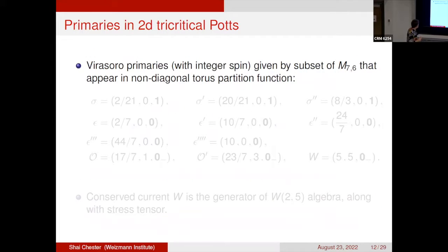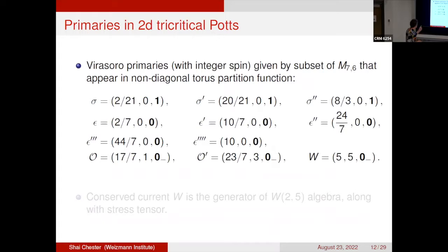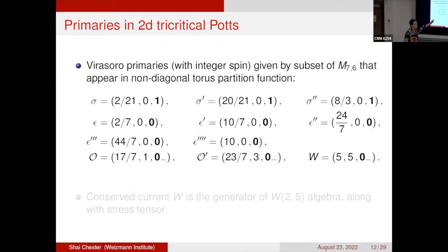For the 2D tricritical Potts CFT, the Virasoro primaries include: charged operators σ (relevant), σ' (relevant), σ'' (irrelevant); singlets ε (relevant), ε' (relevant), ε'' (irrelevant), ε''', ε''''; and operators in the sign representation including W with spin five — giving the enhanced W_{2,5} symmetry. This is another 2D curiosity that does not generically persist above 2D. Since these are minimal models, one knows all scaling dimensions as well as all OPE coefficients.